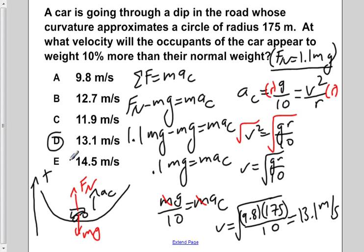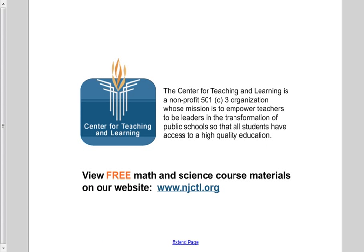So the velocity for our car to appear to weigh 10% more than the normal weight would be D, 13.1 meters per second. Here we go! I'll see you next time.